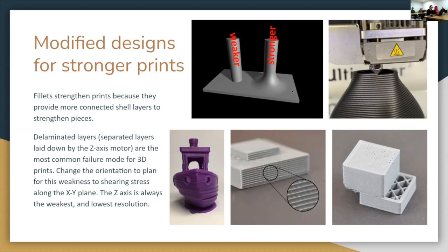Adding a small fillet — even one or two millimeters — is enough that you get more contact as you make that transition, spreads the stress out, and you get a stronger part.